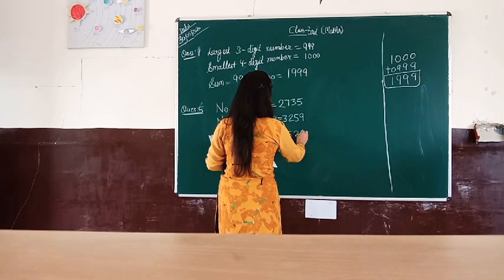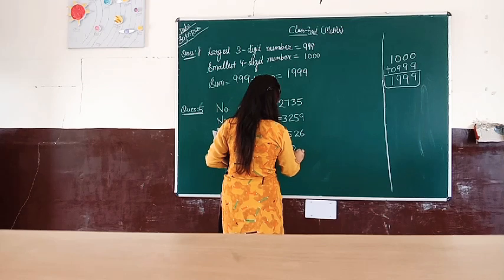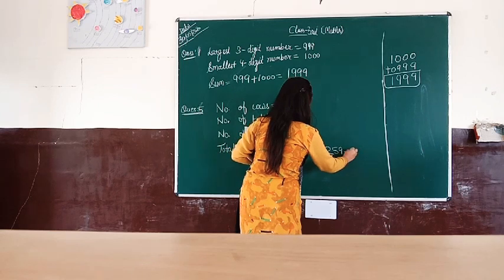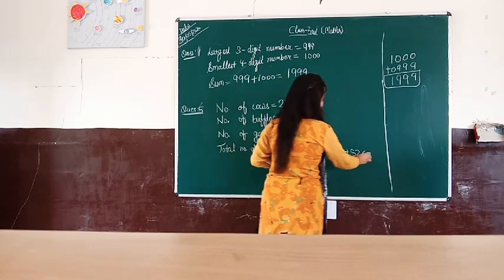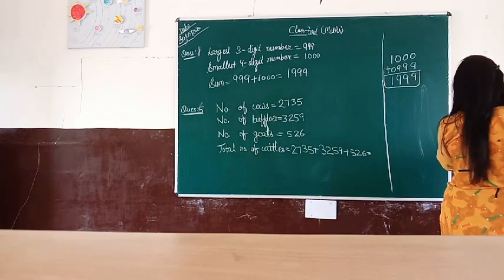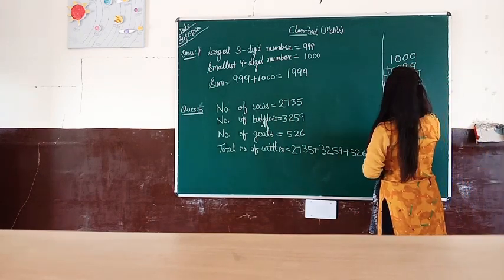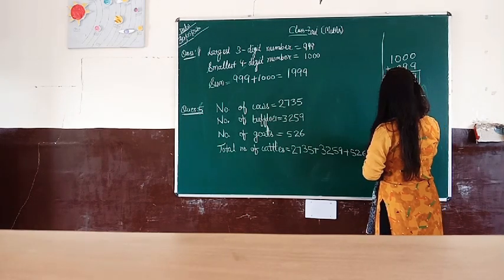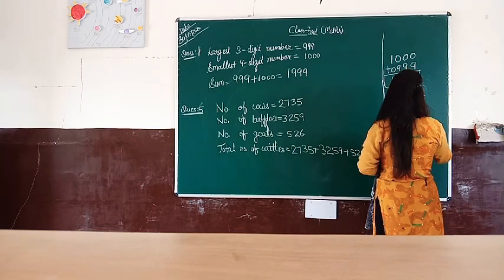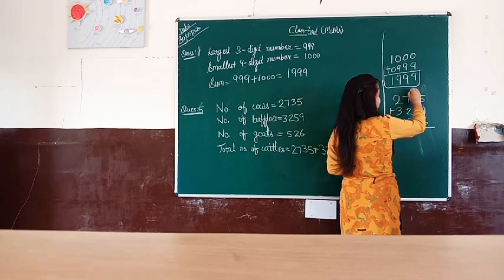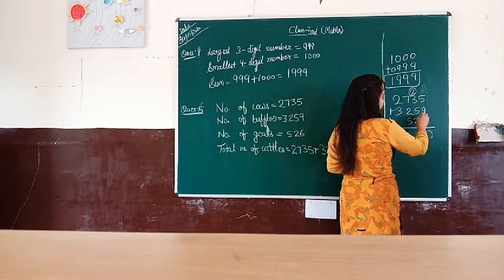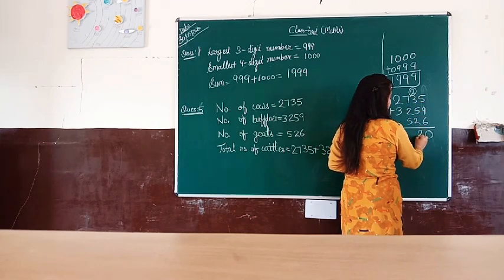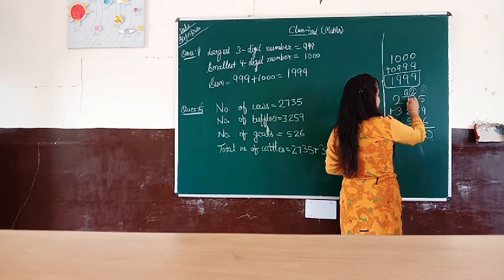Number of cattle equals 2,735 plus 3,259 plus 520. Starting from the right: 5 plus 9 plus 0 is 14, write 4 carry 1. Then 3 plus 5 plus 2 is 10, plus carry 1 is 11, write 1 carry 1.